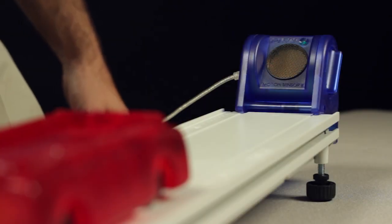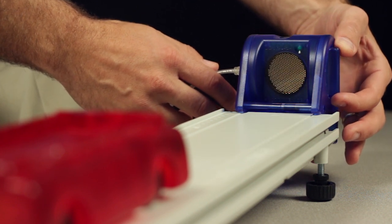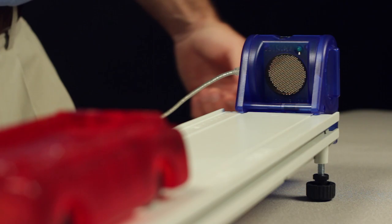When making measurements, the transducer on the front of the motion sensor should be aimed directly at the target object. Use the rotary dial on the side of the sensor to aim the sensor at the target object.